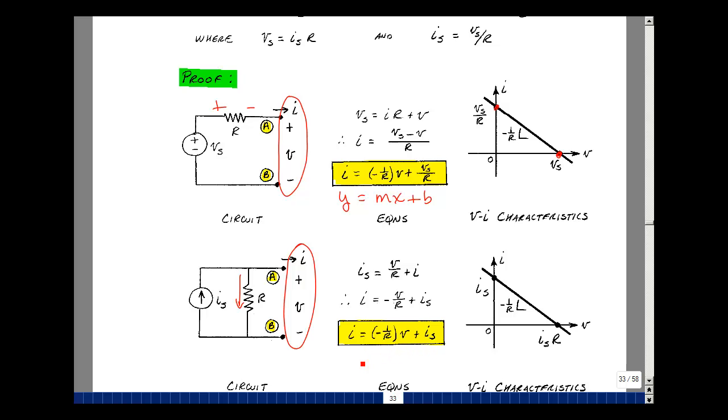And again, the equation here is that of a straight line. When V is equal to 0, I would have I equals I sub S. And that's this point right here. And then if I were to let I equal 0, I would have I sub S is equal to V over R. I just multiply here by R. And so V would equal I sub S times R. This is the plotting of all possible solutions for the second circuit.